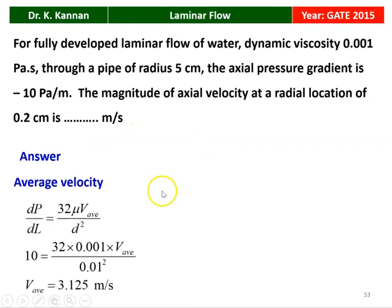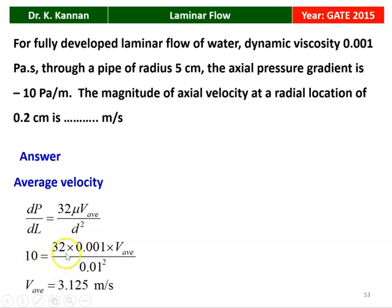To solve the problem, we first find the average velocity. The pressure gradient dP/dL is given by 32 μ V-average divided by D square. The pressure drop is minus 10 Pascal per meter. So 10 equals 32 × 0.001 × V-average divided by 0.01 square. Calculating the average velocity gives 3.125 meters per second.